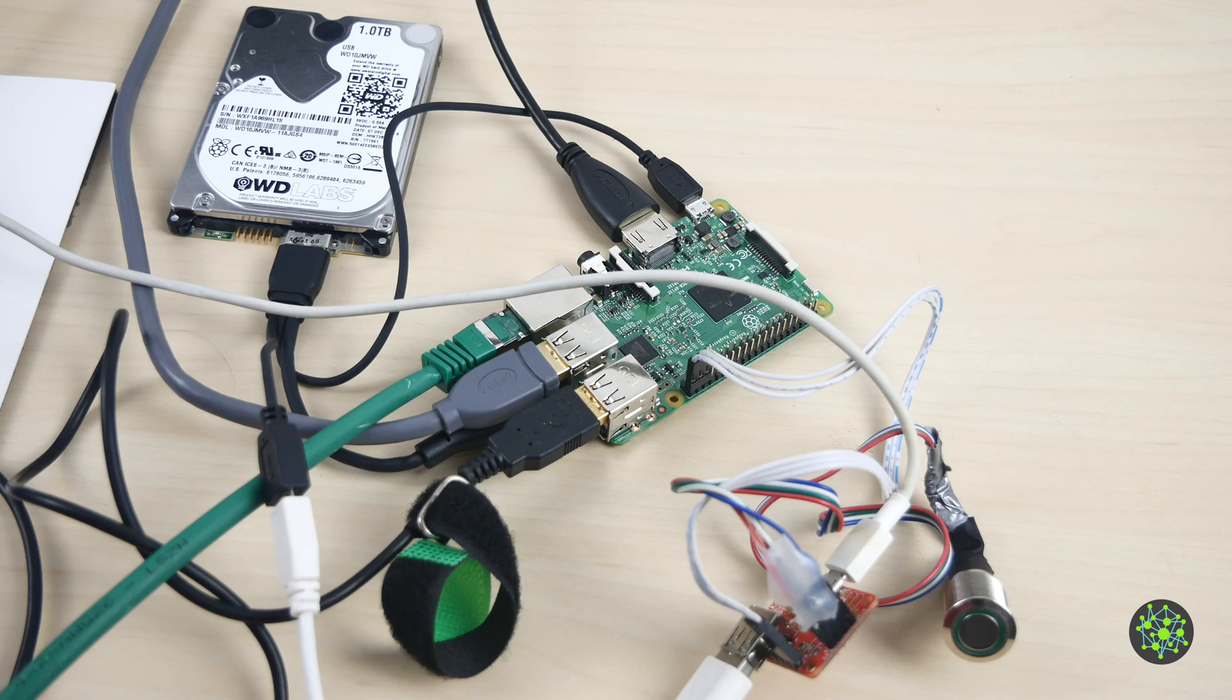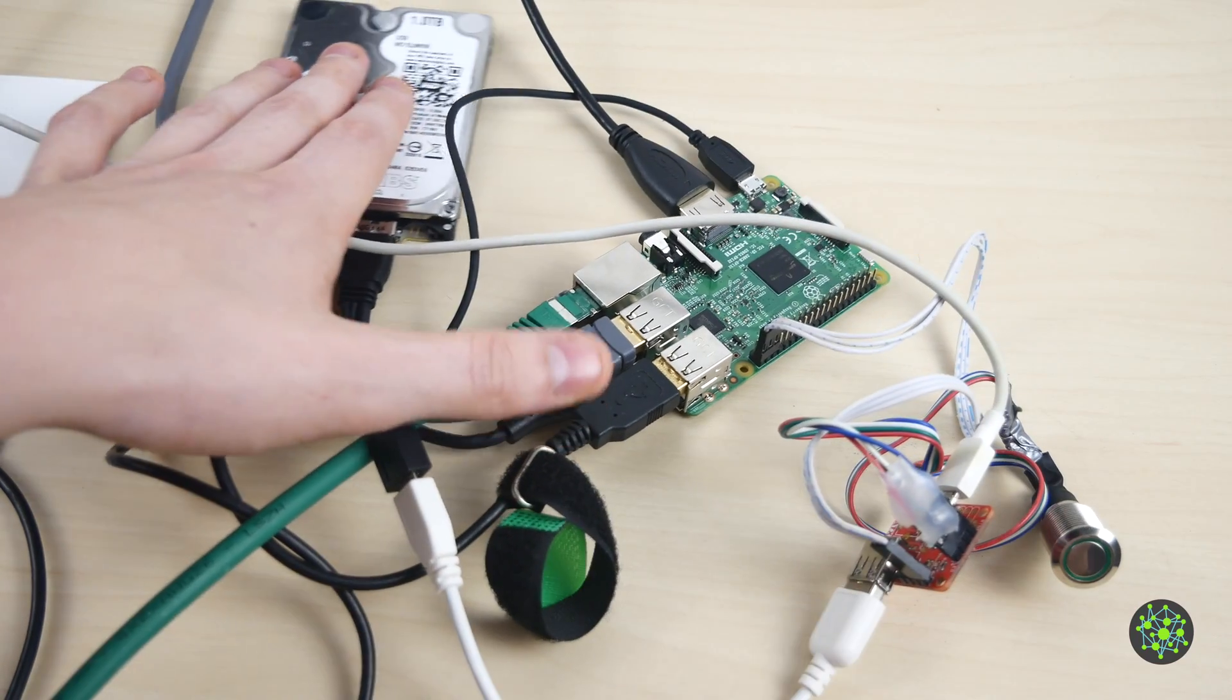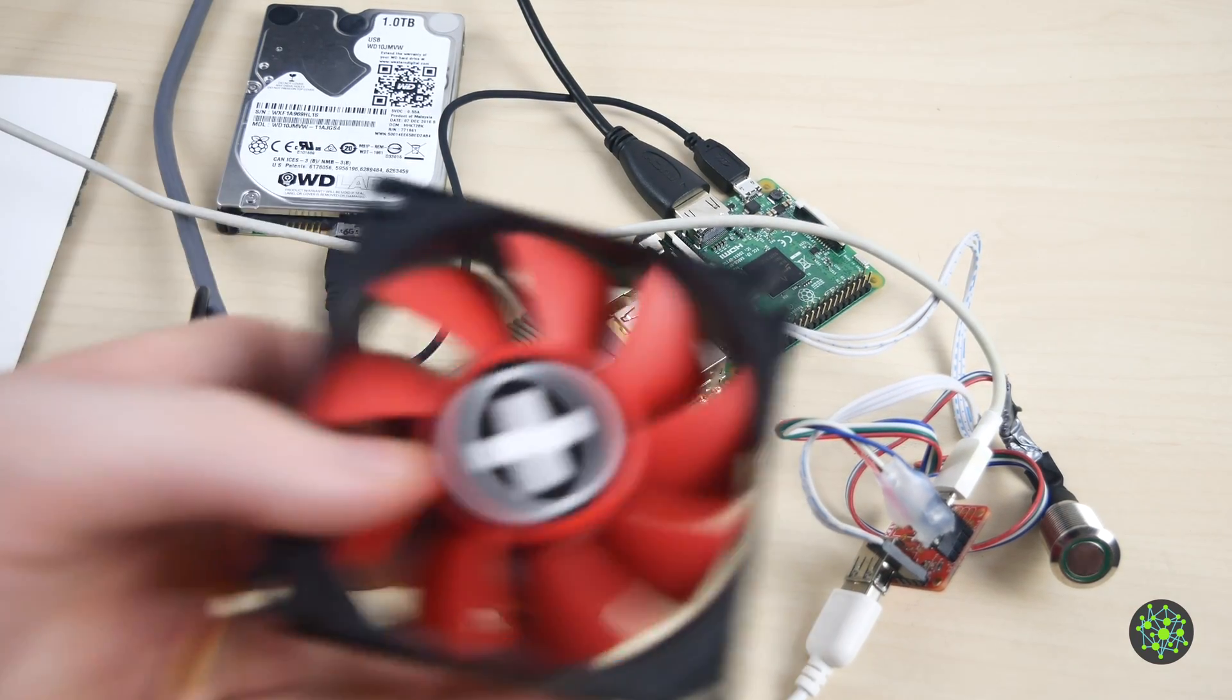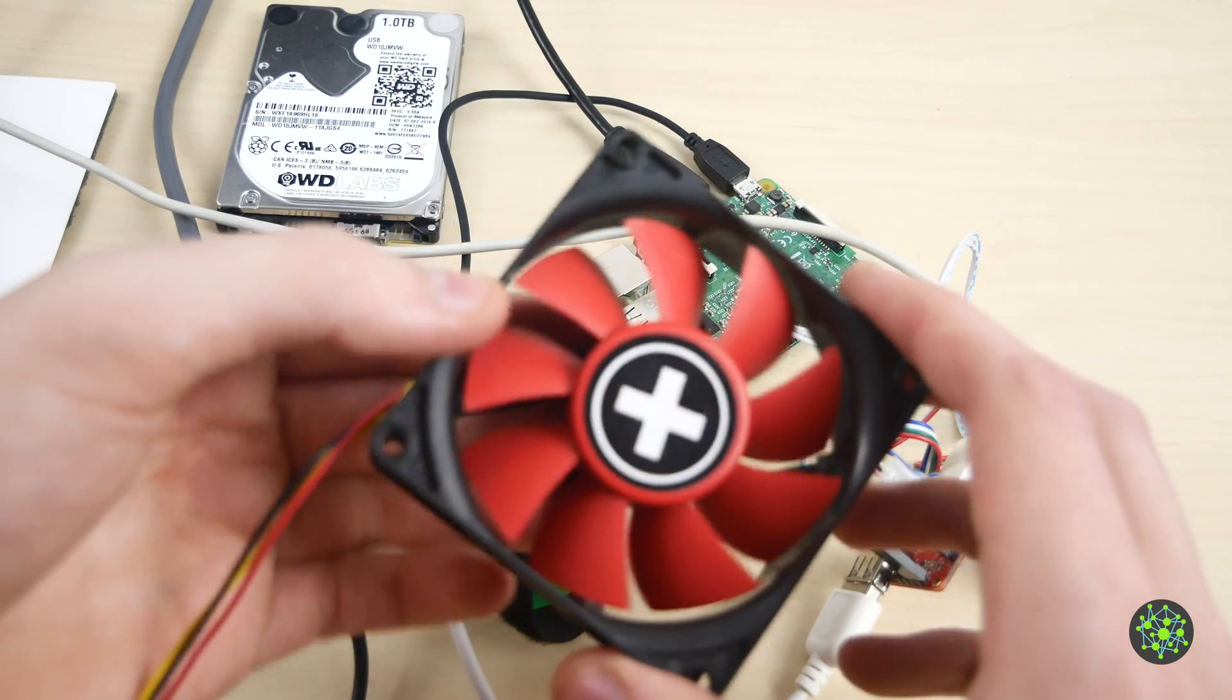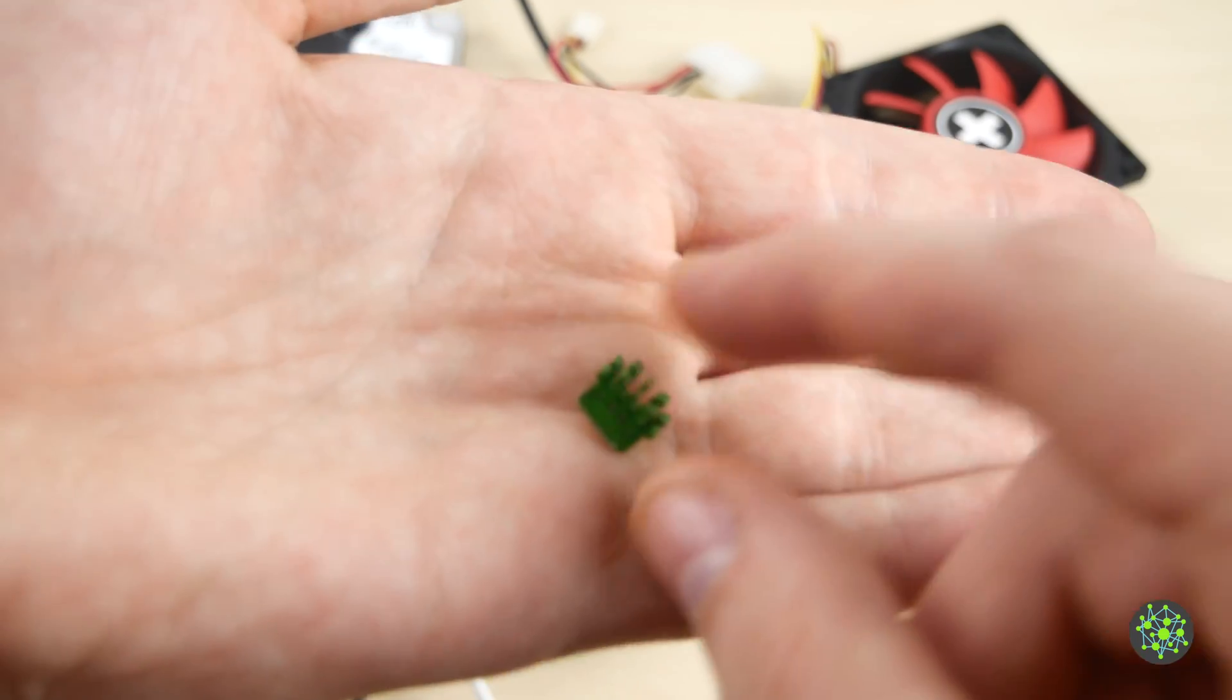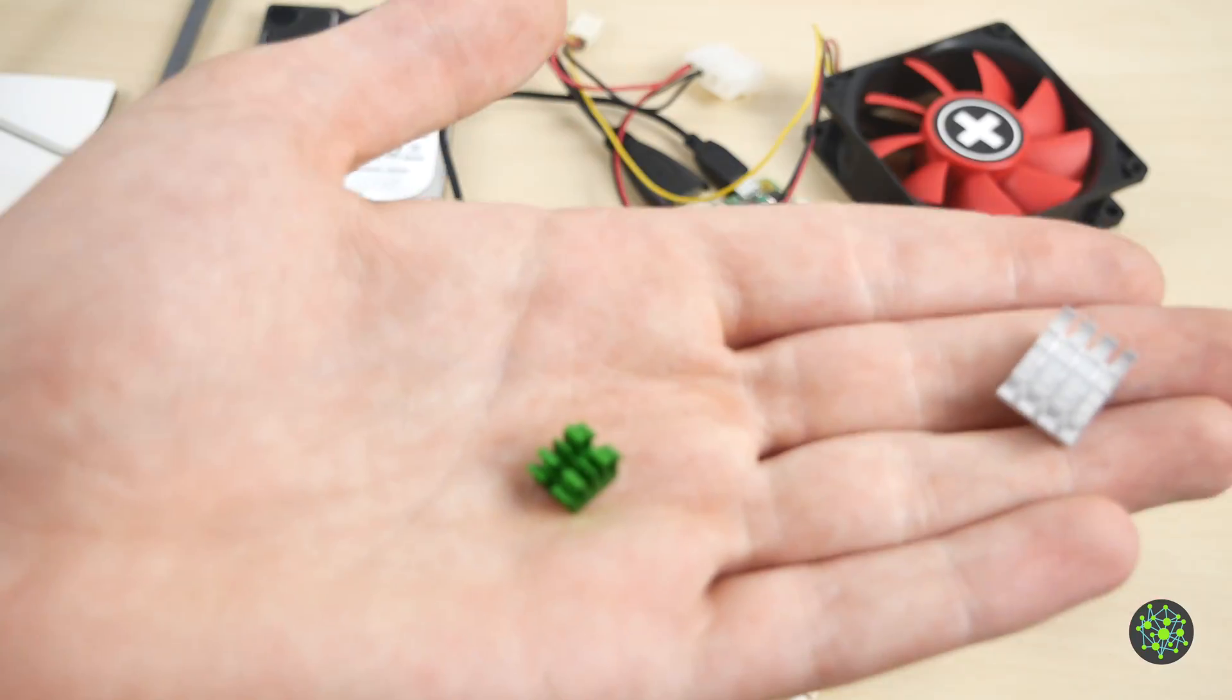Hello guys, Maurits here. Today we are going to prepare the Raspberry Pi so that we can cool it down with a 12 volt PC fan. For that, we are going to put on some heat sinks.